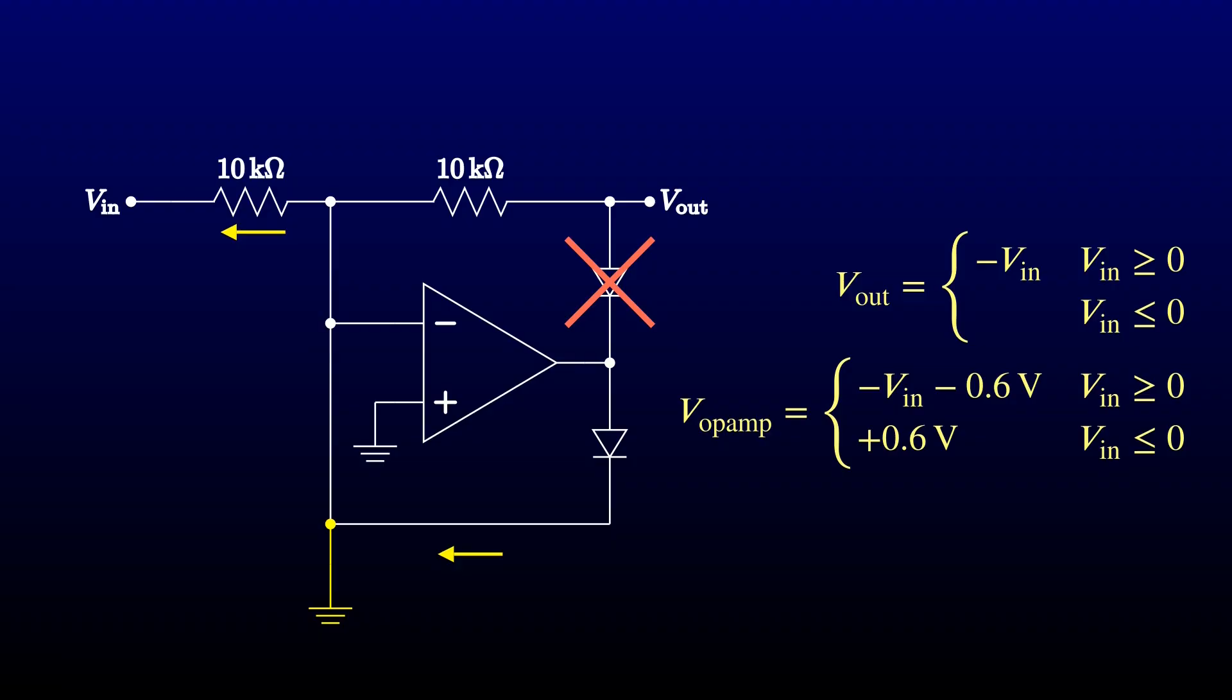With that diode turned off, looking back into the output port sees only a resistor to the virtual ground, so the output voltage is zero.